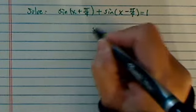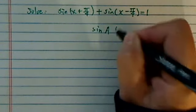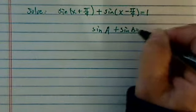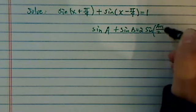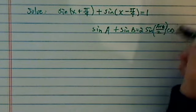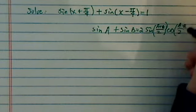The first thing you want to recognize is the sine of A plus sine of B equals sine of half the angle A plus B, and then cosine of half A minus B.